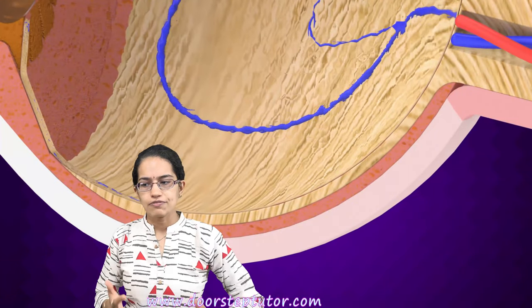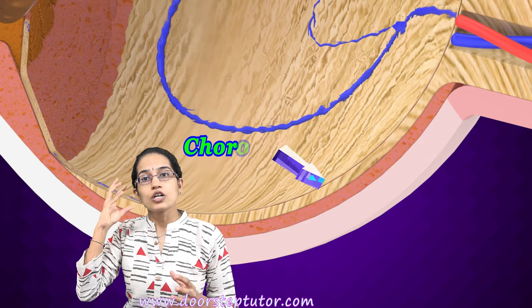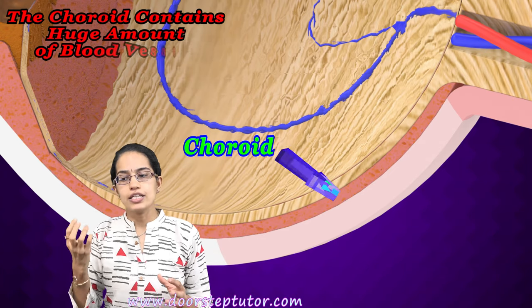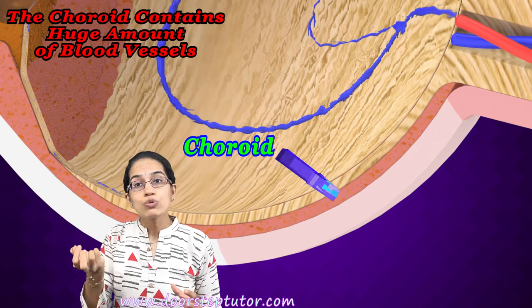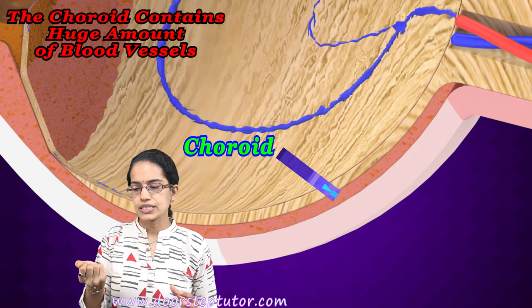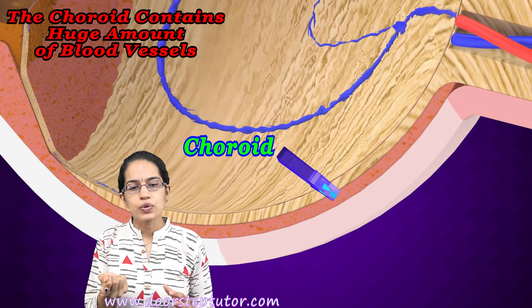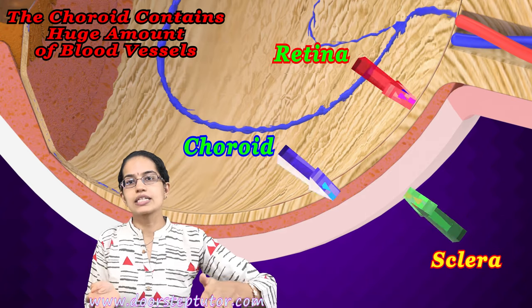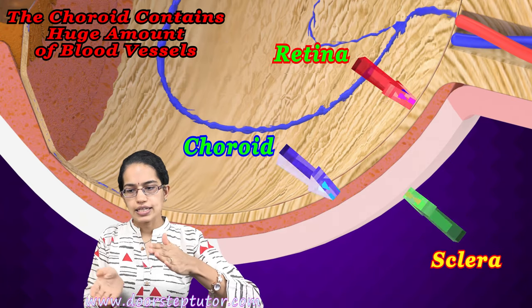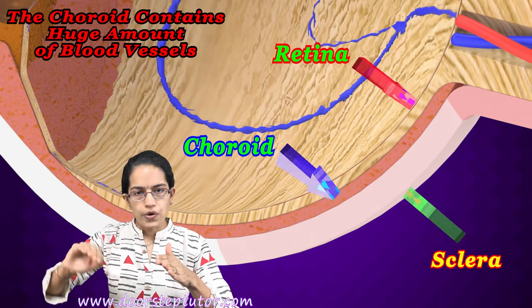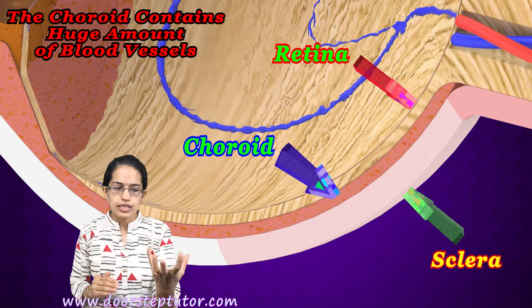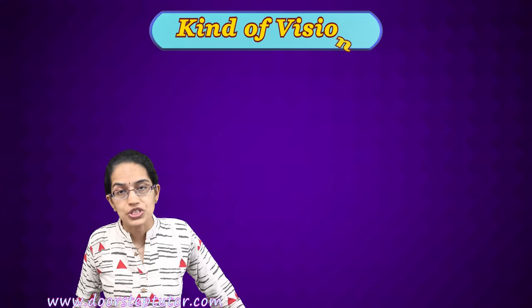The next important structure is the choroid. The choroid layers contain a large number of blood vessels and lie between the sclera and the retina. So between the sclera and the retina you have the choroid present. Another important concept is the kind of vision — day vision as well as night vision.